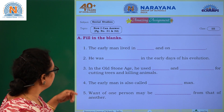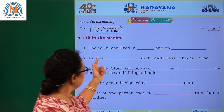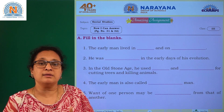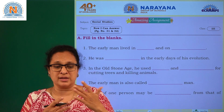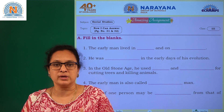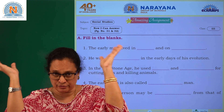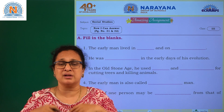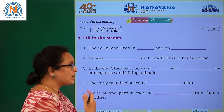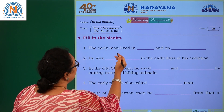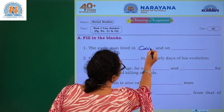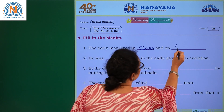Let me start with fill in the blanks. The early man lived in dash and on dash. The early man used to live in caves and on the treetops, to protect themselves from natural things like rain, sunshine, and wild animals. So, early man lived in caves and on treetops.